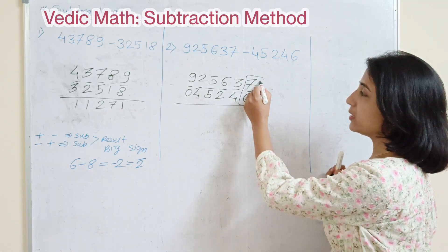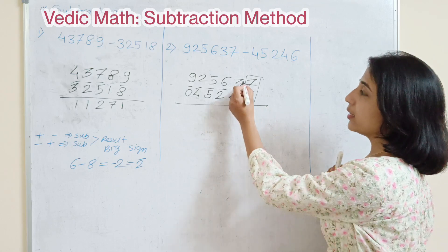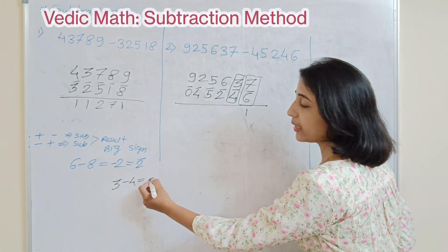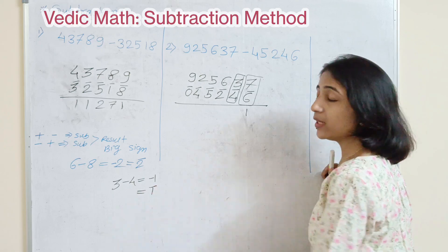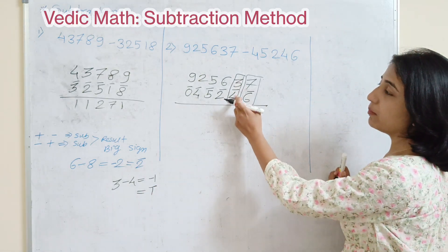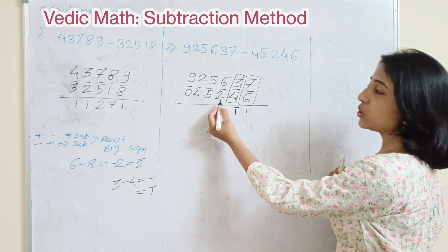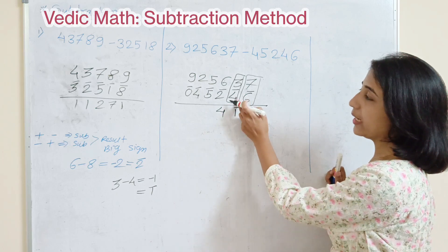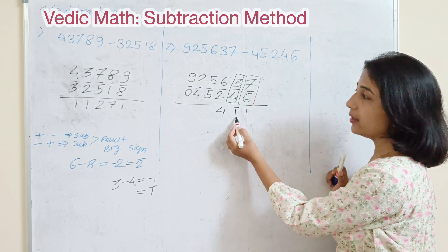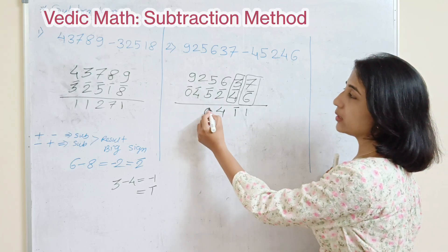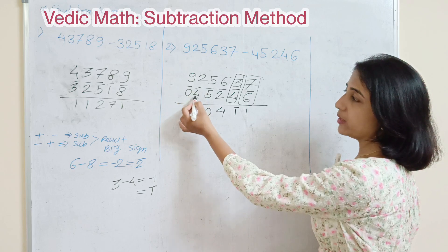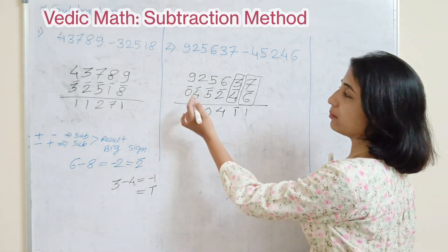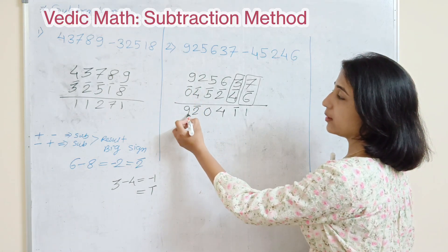Applying digit-wise subtraction: 7 minus 6 is 1. Next, it is actually 3 minus 4, which gives minus 1 — so instead of writing minus 1, write 1-bar. Then 6 minus 2 is 4, which is positive, so write 4. The next digit: 4 is negative so write 4-bar. Then 5 minus 5 is 0. Next, 4 minus 2 is 2, but since 4 is negative write 2-bar. Finally, 9 minus 0 is 9.